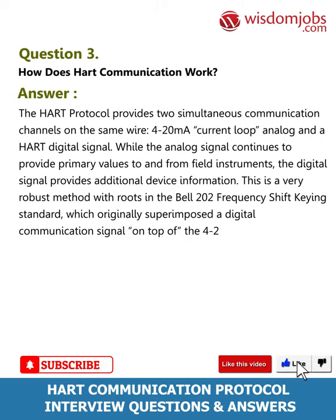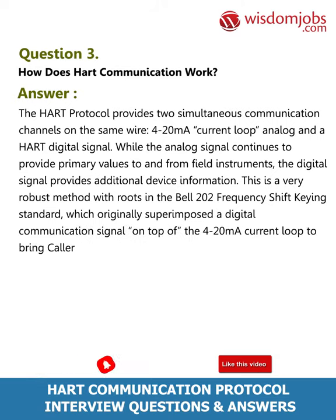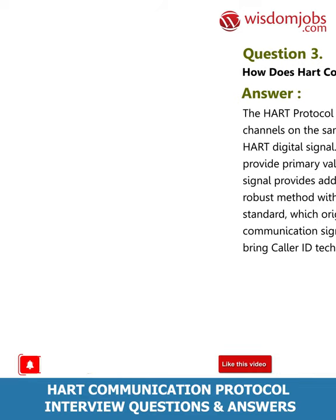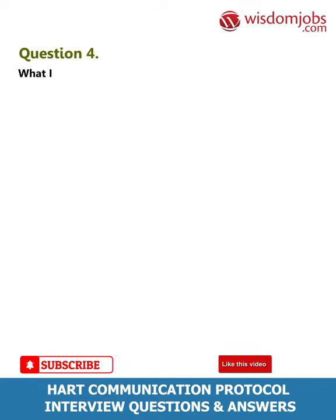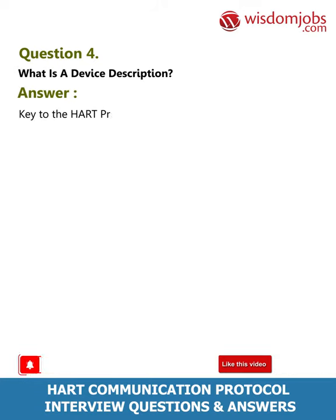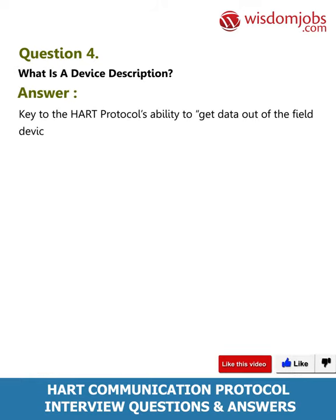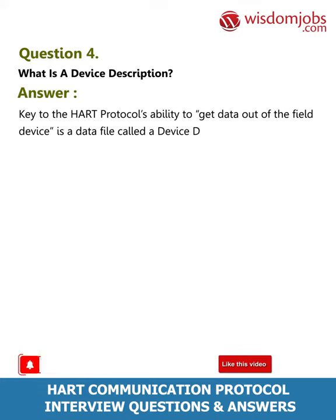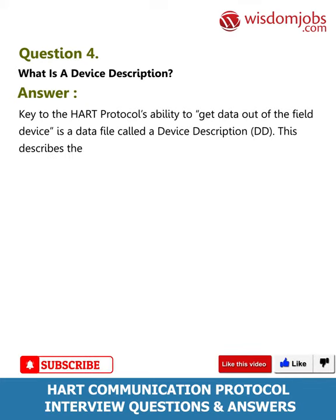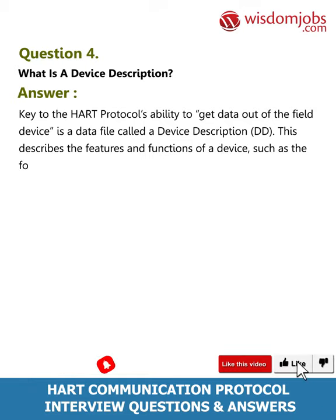The Bell 202 FSK standard originally superimposed a digital communication signal on top of the 4 to 20 milliampere current loop to bring caller ID technology to the field of telephony. Question 4: What is a device description? Answer: Key to the HART protocol's ability to get data out of the field device is a data file called a device description (DD). This describes the features and functions of a device such as the form and content of menus and graphic displays to be presented in host computers or handheld devices.